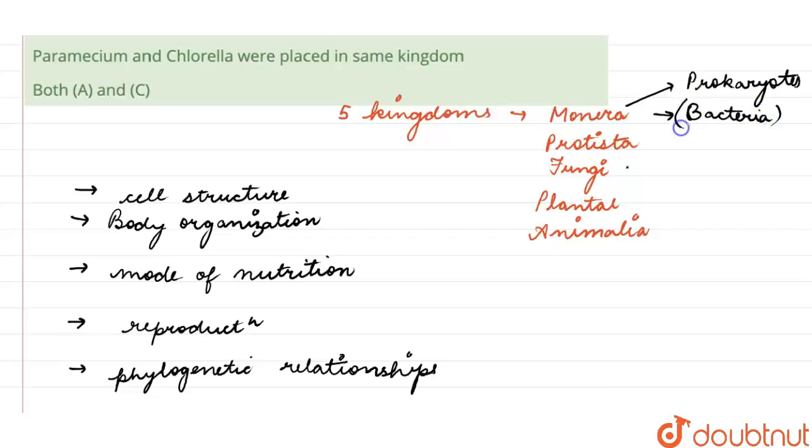Then in the Protista, the unicellular eukaryotes were kept.